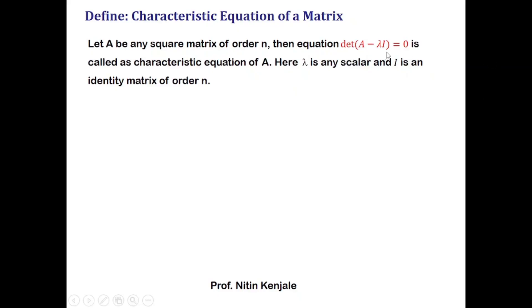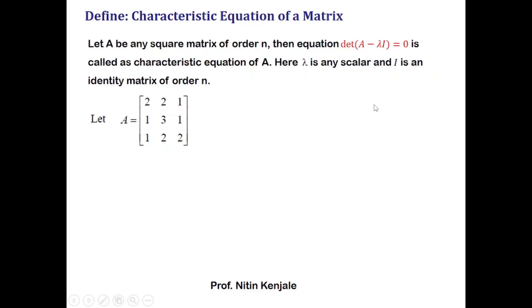Let us see an example of the characteristic equation of the matrix. Let A be this 3×3 matrix. Then the characteristic equation of A is given by determinant of A minus lambda I is equal to zero. First we will find out what is A minus lambda I, then we will find its determinant, and then we will equate it with zero.